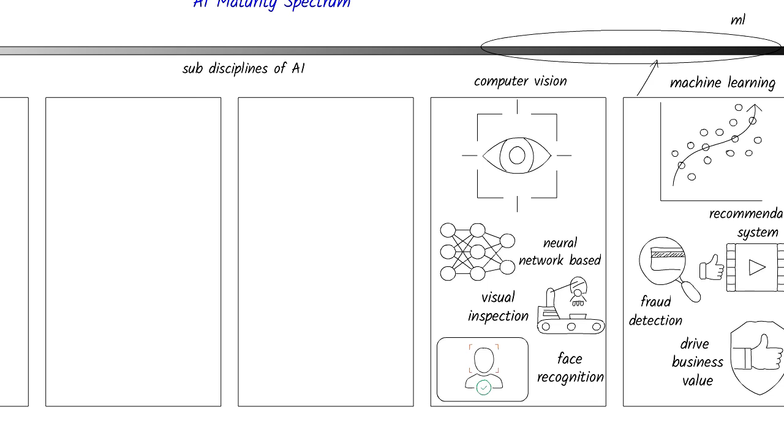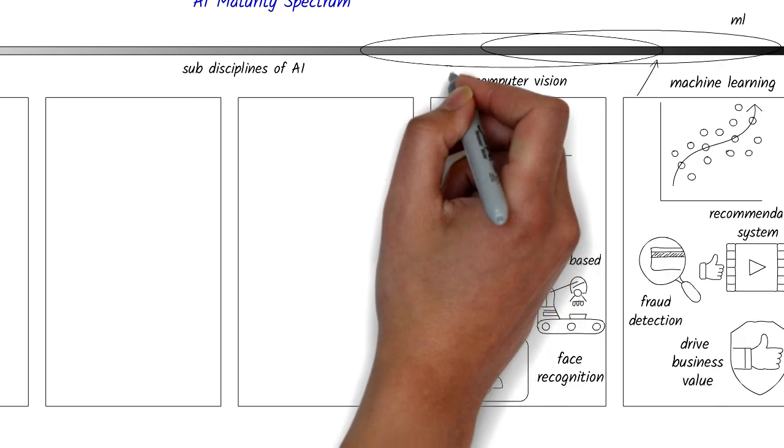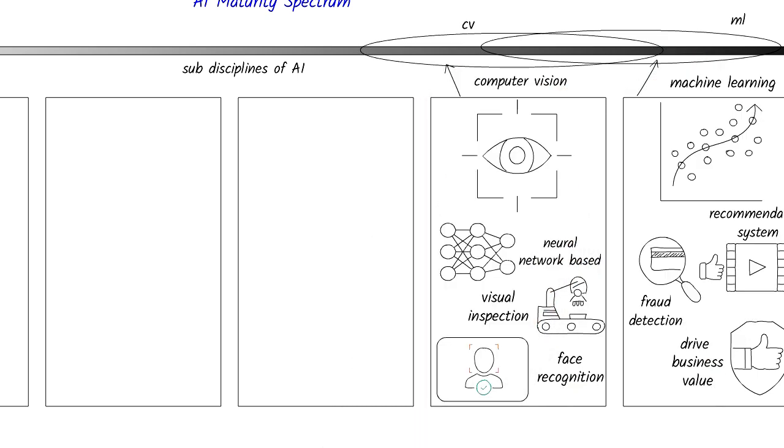In manufacturing, computer vision systems inspect products for defects in real-time, ensuring quality control and reducing waste. Here's where computer vision is on the maturity spectrum.